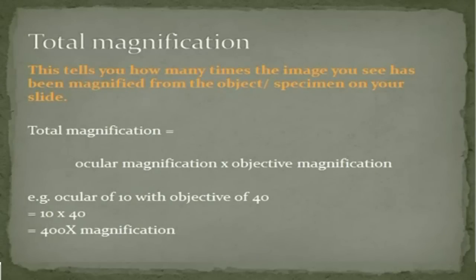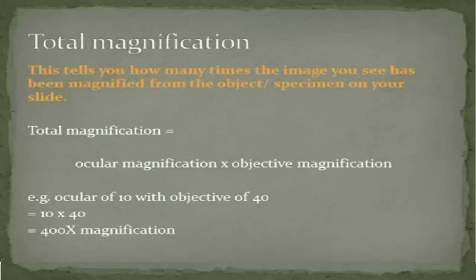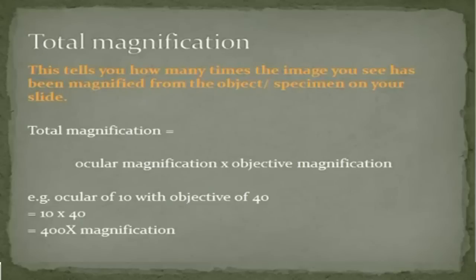Total magnification is the ocular magnification times by the objective magnification. So if you're looking down an ocular lens that has a 10x magnification and you're using your medium power 40x magnification objective lens, then you've got a total of 400x magnification.